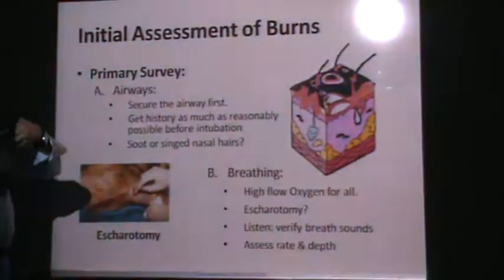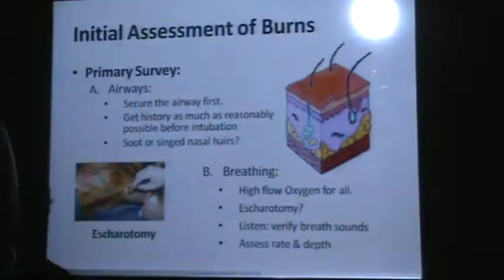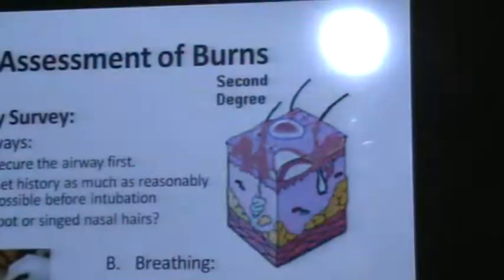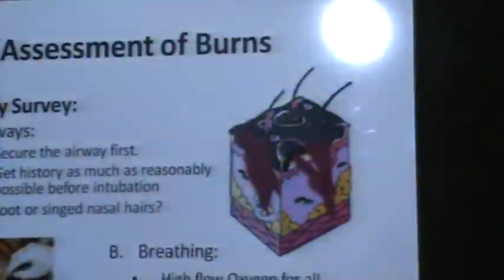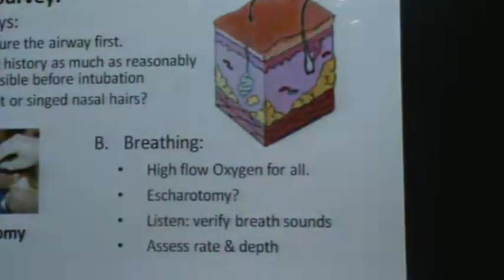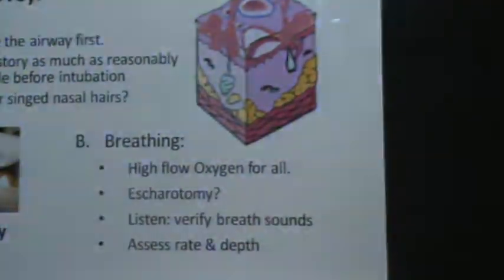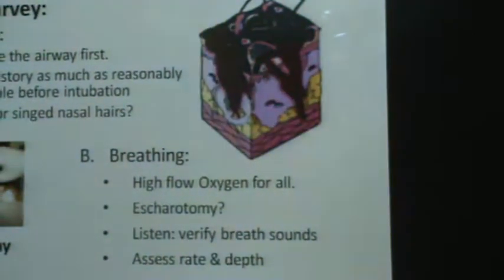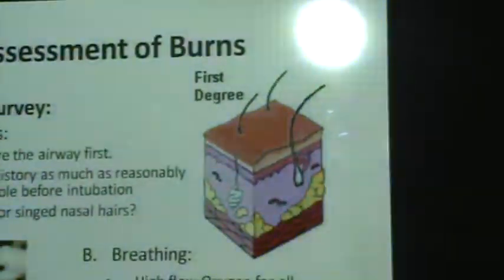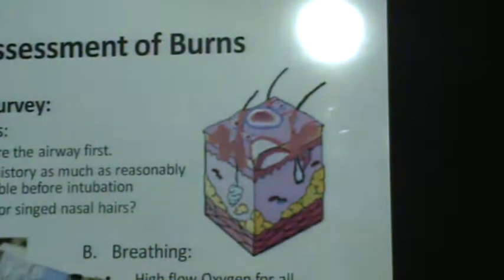We want to make sure this person's airways are open so air can go in and out. We look for soot or singed nasal hair. For breathing, we assess oxygen levels using a pulse oximeter. Escharotomy — making an incision in the skin — may be indicated when the skin becomes so tough and thick that it acts as a barrier preventing the patient from breathing.